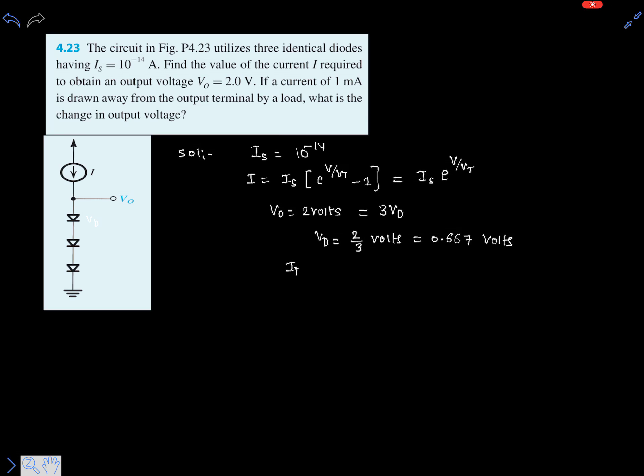Now let's calculate the diode current Id. We should remember that all three diodes are in series, so Id is the same for all three diodes. Using a calculator, with Vt equal to 25 millivolts at room temperature, we compute Id as 10 to the power of minus 14 multiplied by exponential of 0.667 divided by 0.025.